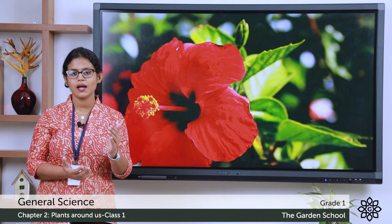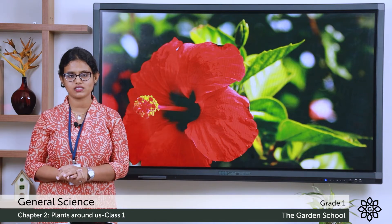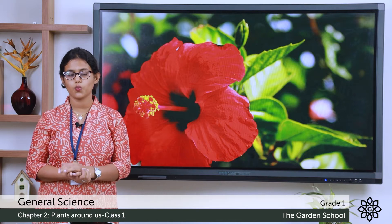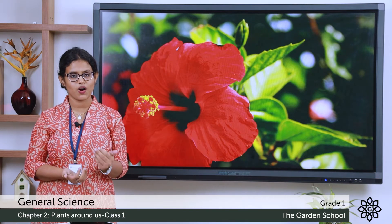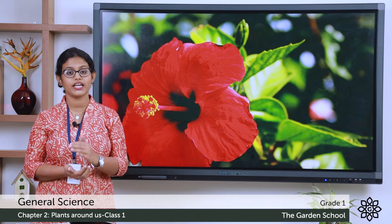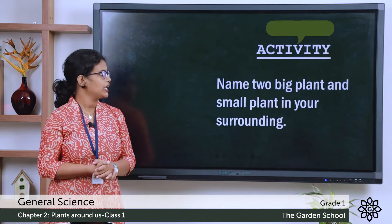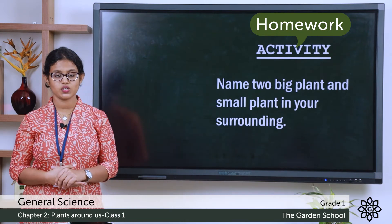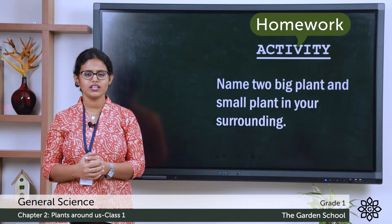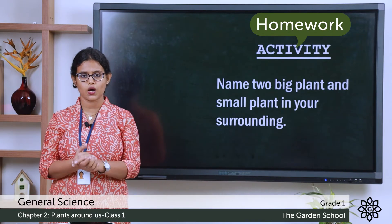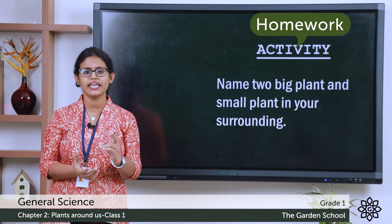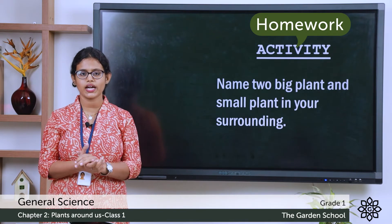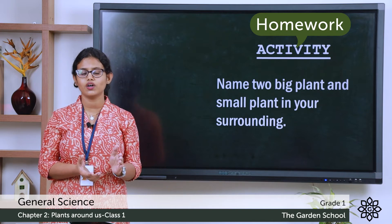So we learned about big plants and small plants. Big plants are trees — they are big and strong. Small plants are smaller than trees and they grow short. You can name two big plants and two small plants in your surroundings. Look around and see the different kinds of plants, then write them down in your notebook.